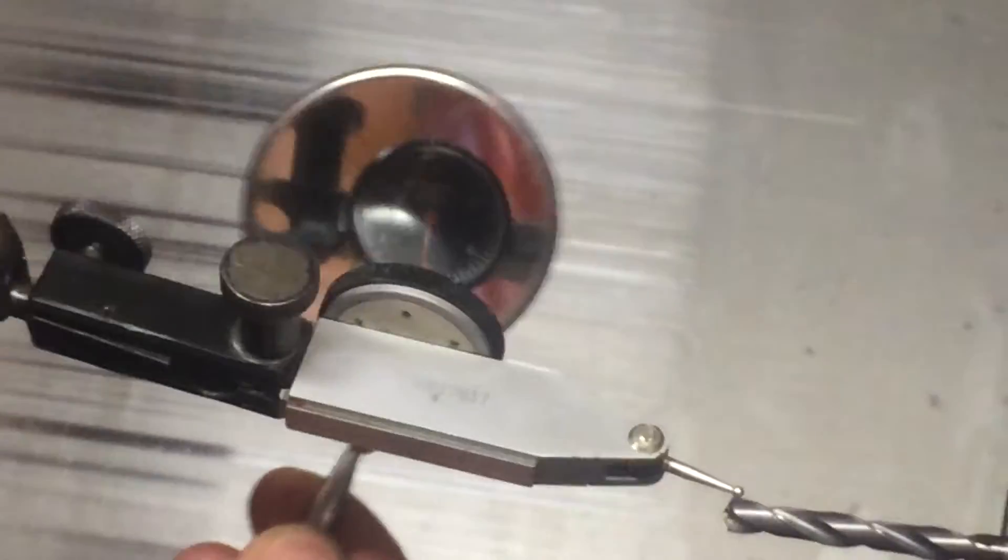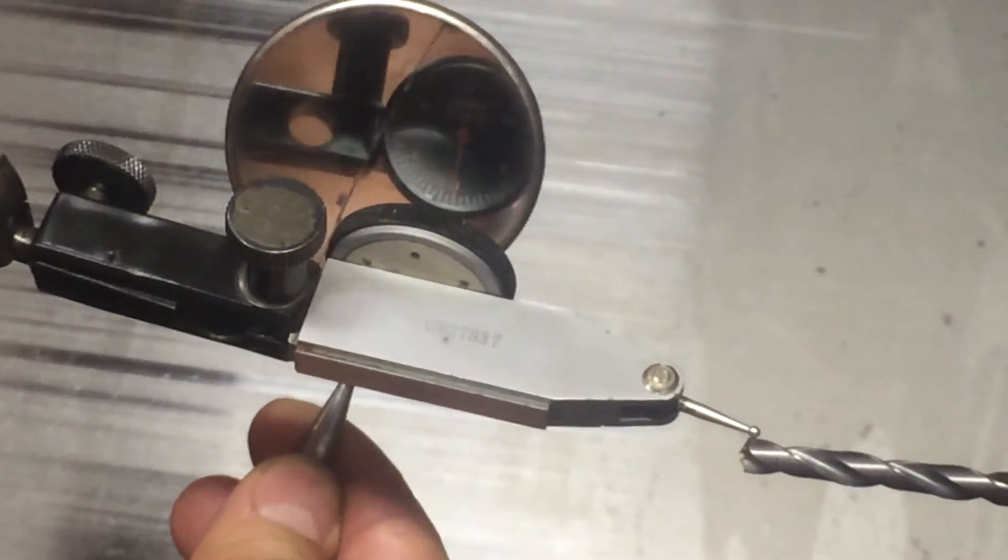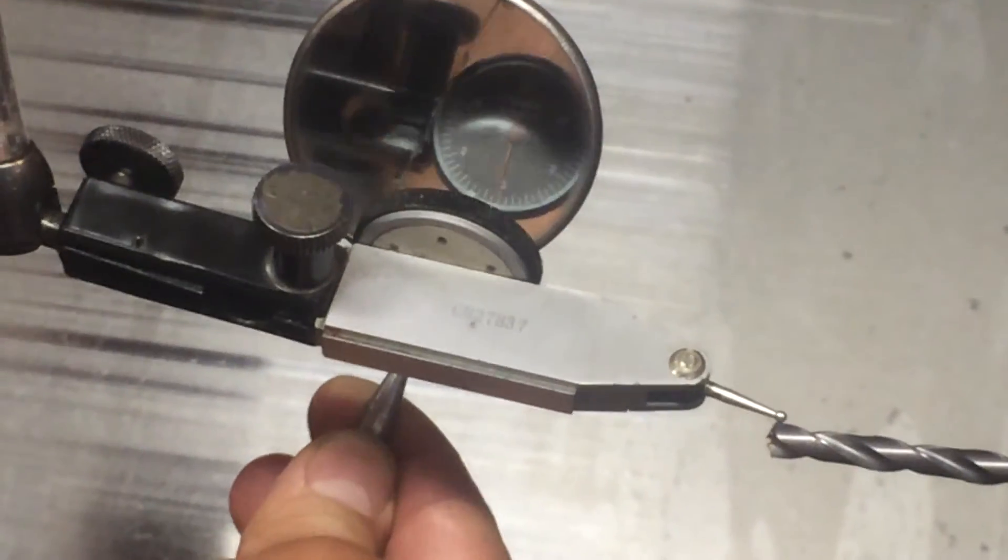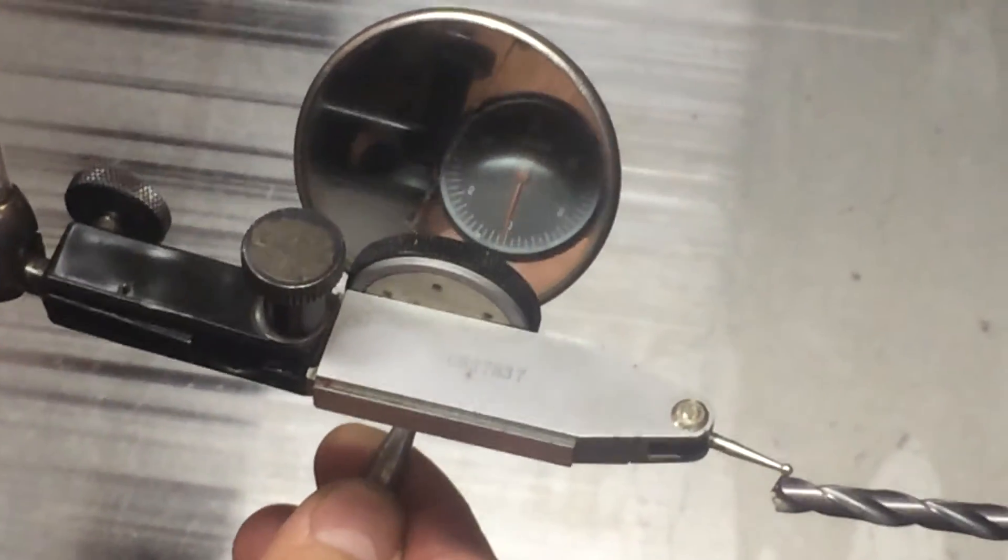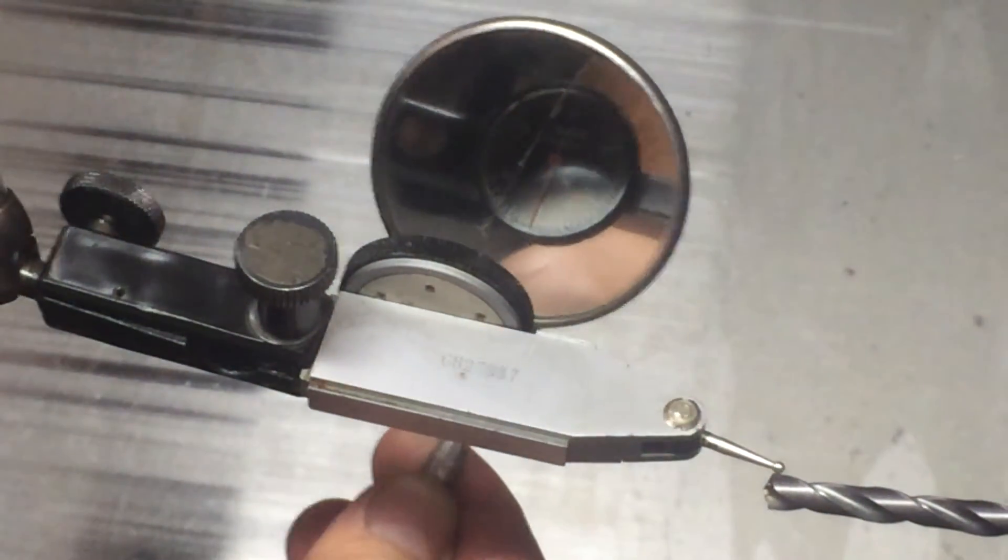And if I go back to the opposite side, I should read zero here as well. I'm maybe within about a tenth of an inch from center line. So now we read zero on both sides.